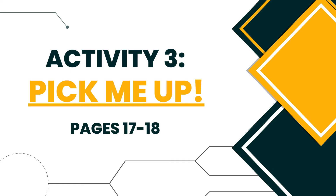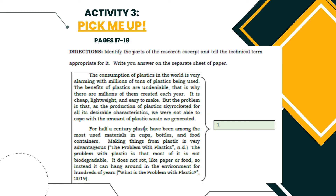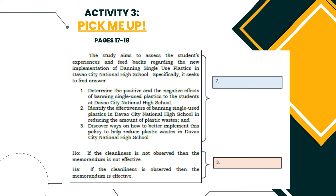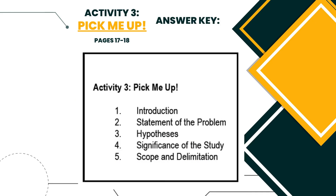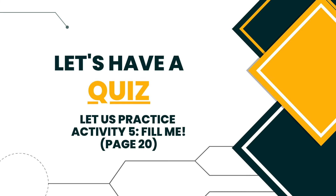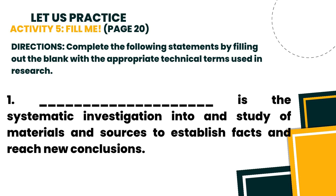Okay, so before we start our activity, do you have any questions with regards to our topic today? If there's none, let's proceed to our activity. Turn your modules to pages 17 to 18 and answer Activity 3: Pick Me Up. Choose a partner in answering this activity. You are given five minutes to answer. Okay, time's up — check your answers according to this answer key. To assess your individual knowledge about our topic today, we will have a quiz found on your module on page 20. Complete the following statements by filling in the blank with the appropriate technical terms used in research. You are given five minutes to answer this quiz.